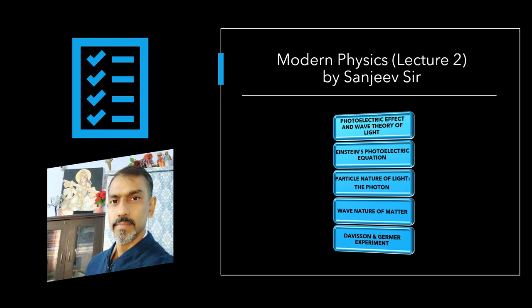In previous lecture we discussed photoelectric emission. We now recapitulate the experimental features and observations described in previous lecture, known as laws of photoelectric effect.